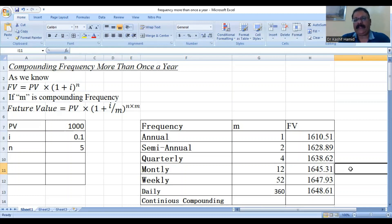the future value is more than 1,610, semi-annual, 1,628, quarterly, 1,638.62, monthly 1,645.31, weekly 1,647.93 and daily 1,648.61.